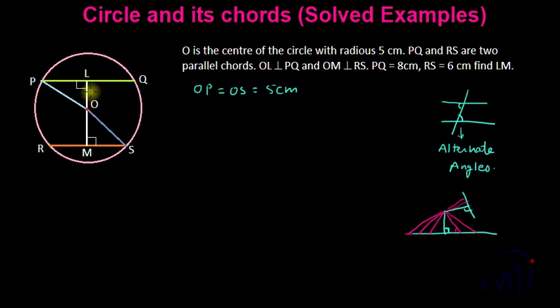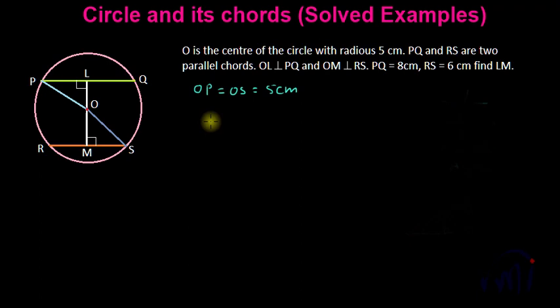We are given that angle OLP is 90 degrees and angle OMS is 90 degrees and PQ and RS are two parallel lines. That means LM is a straight line because this angle is equal to this angle and from any point we can draw exactly one perpendicular to any line. That means L, O, M are collinear. So if I can find OL and OM and add these two lengths, it will be equal to length LM. So that is what we have to do.